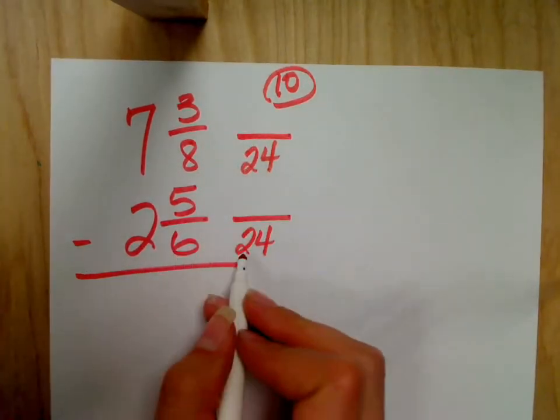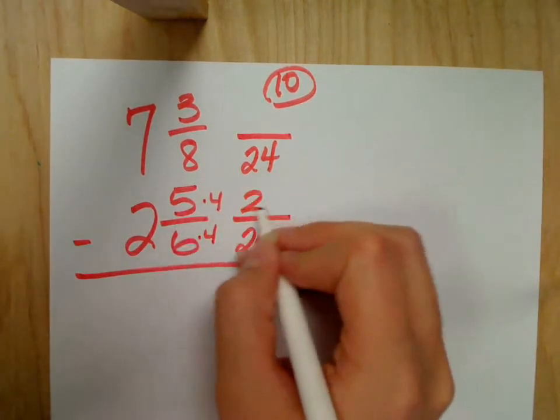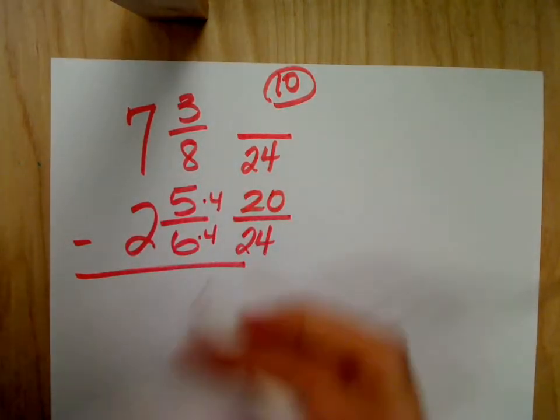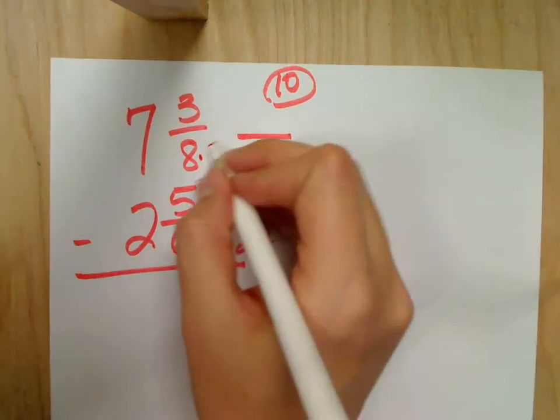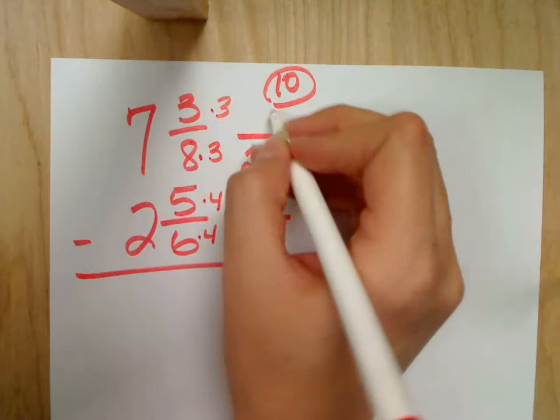And so 6 times what gives me 24? It's times 4, so I multiply 5 times 4, which gives me 20. Then here I have 8 times what gives me 24, which is 3, so I'm going to do 3 times 3, which is 9. Good.